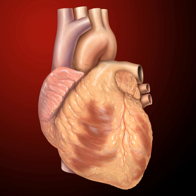Fish, in contrast, have two chambers, an atrium and a ventricle, while reptiles have three chambers. In a healthy heart, blood flows one way through the heart due to heart valves, which prevent backflow.